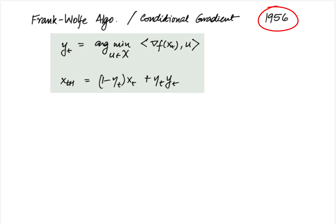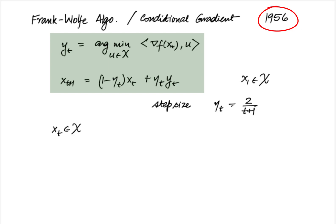Here eta_t is the step size. In the original paper they suggested eta_t = 2/(t+1), but many other choices are of course possible. The algorithm requires initialization such that x_1 is in X, i.e., x_1 is feasible. Then, if x_t lies in X and y_t obviously lies in X, it follows that x_{t+1} — which is a convex combination of x_t and y_t for eta_t < 1 — also lies in X, since it is a convex set.